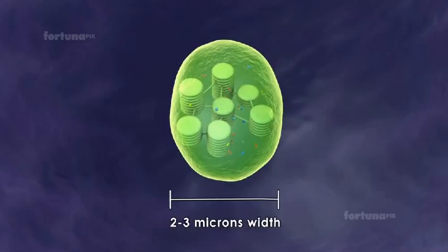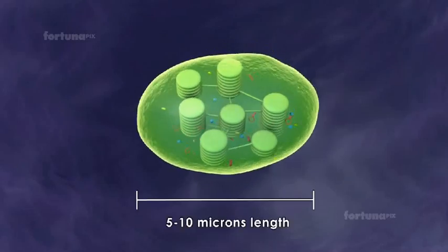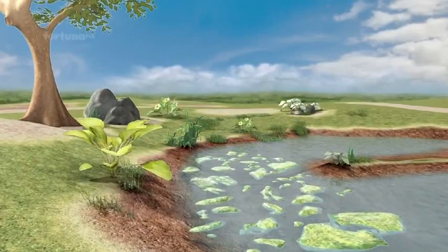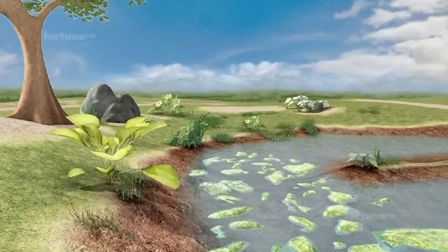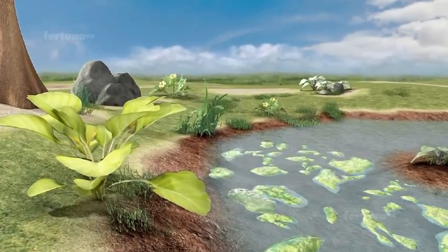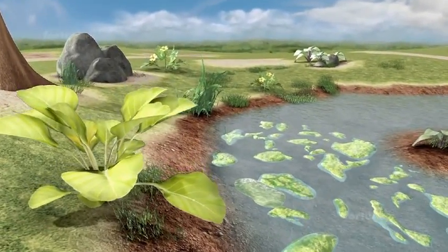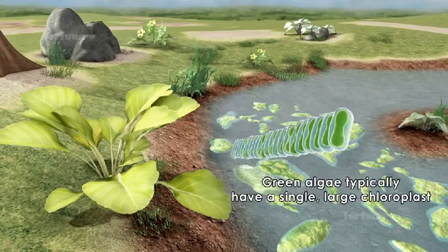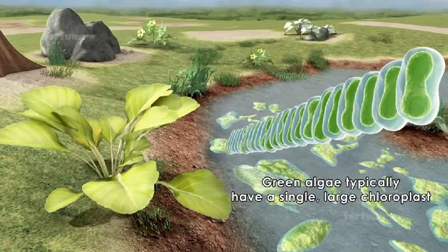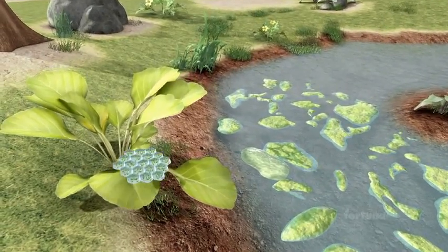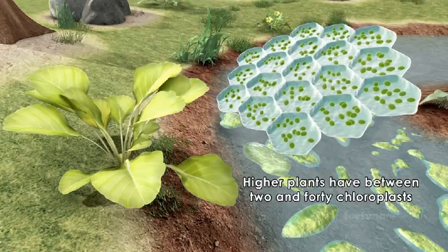Chloroplasts measure 2 to 3 microns width and 5 to 10 microns in length. The number of chloroplasts varies from cell to cell and from species to species, but it usually remains constant for a particular plant. Green algae typically have a single, large chloroplast, while the cells of higher plants have anywhere between 2 and 40 chloroplasts.